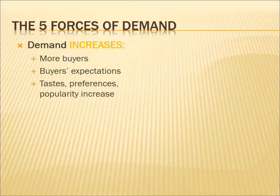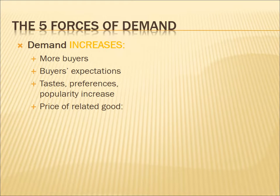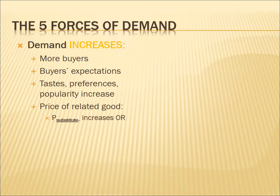The third force is pretty straightforward: when something becomes more popular — when tastes, preferences, or popularity for something increases — the demand for that product shifts to the right. The fourth force that will shift the demand curve to the right is the price of a related good. There are two kinds you need to keep straight. First, there's the price of a substitute. Think Coca-Cola and Pepsi: if the price of Pepsi goes up, we're going to buy more Coca-Cola because it is relatively cheaper. When the price of a substitute goes up, the demand for the product you're looking at increases.